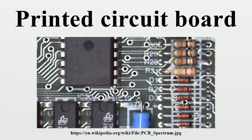Conductors on different layers are connected with plated through holes called vias. Advanced PCBs may contain components — capacitors, resistors or active devices — embedded in the substrate. FR4 glass epoxy is the primary insulating substrate upon which the vast majority of rigid PCBs are produced. A thin layer of copper foil is laminated to one or both sides of an FR4 panel. Circuitry interconnections are etched into copper layers to produce printed circuit boards, and complex circuits are produced in multiple layers.